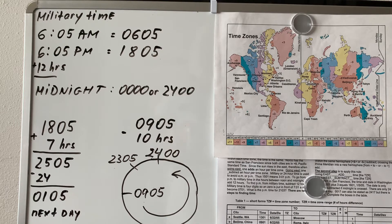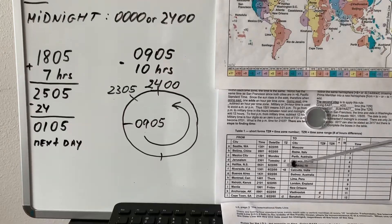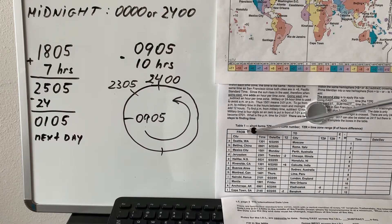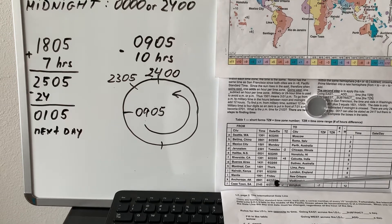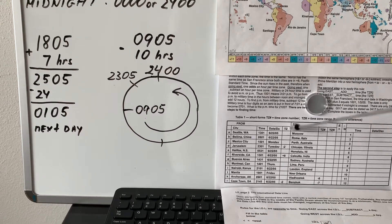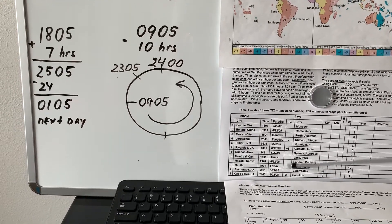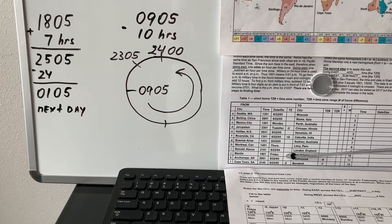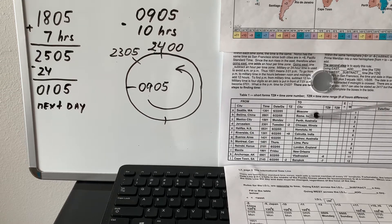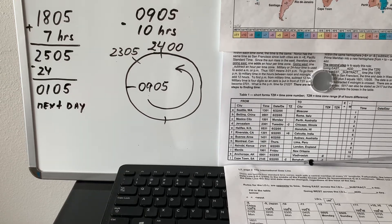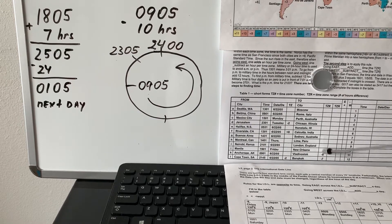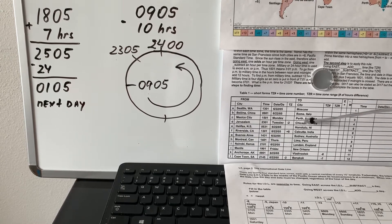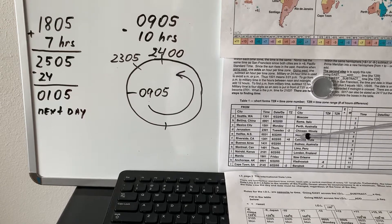In your lab, on the second page, you have some cities listed. It shows 'from' — you have the time, the date, the time zone difference. If you don't have it on your page, go to my PowerPoint presentation and copy the correct numbers, or use the map to find the time zone numbers. Then you go to these destination cities, find the time zone difference, and calculate the time and the date.